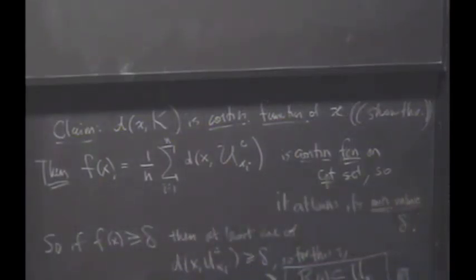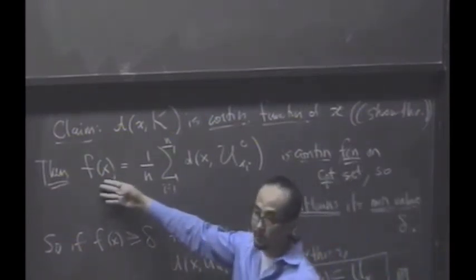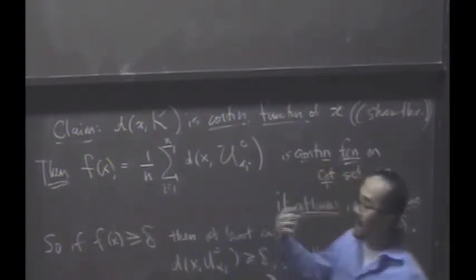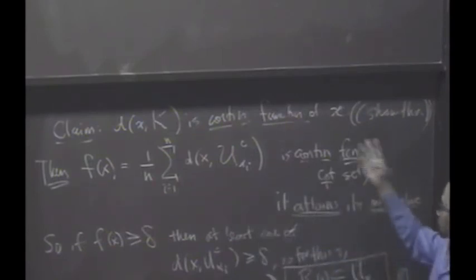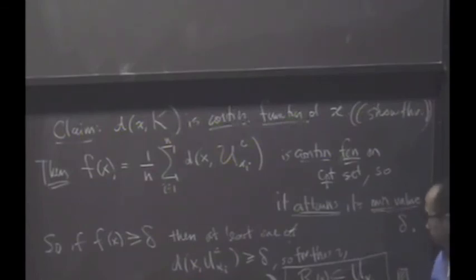And notice, we're really using the fact that it attains its minimum value. Right? Because you might worry, yeah, maybe this function's bigger than zero, but its infimum is zero. Well, its infimum can't be zero because this function achieves its minimum somewhere. And that minimum is always bigger than zero. Excellent question. OK. Very nice.